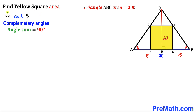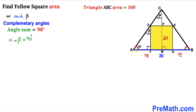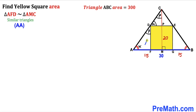Let's assume alpha and beta are two complementary angles, so alpha plus beta equals 90 degrees. Calling one angle alpha, and since the right angle is 90 degrees, the other angle must be beta. In triangle AFD, the angles work out so that the corresponding angles are all alpha, meaning smaller right triangle AFD is similar to bigger right triangle AMC by the angle-angle similarity theorem.